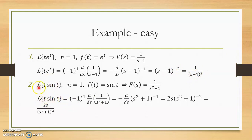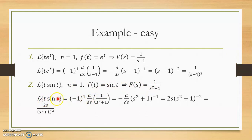Now let's look at the second example: the Laplace transform of t · sin(t). Again, t is to the power of 1, therefore n equals 1. The function f(t) is equal to sin(t), and the Laplace transform F(s) is equal to 1/(s²+1). We put all the information into the formula: L{t · sin(t)} = (−1)^1 times the first derivative of 1/(s²+1). Negative 1 to the power of 1 is minus.